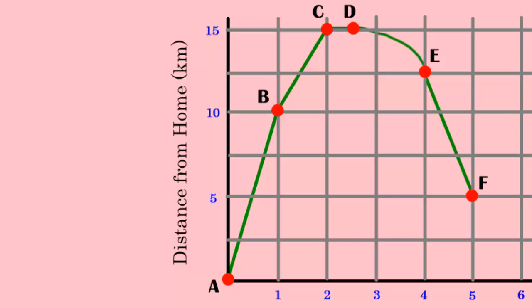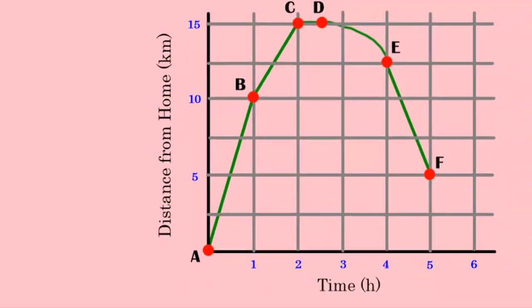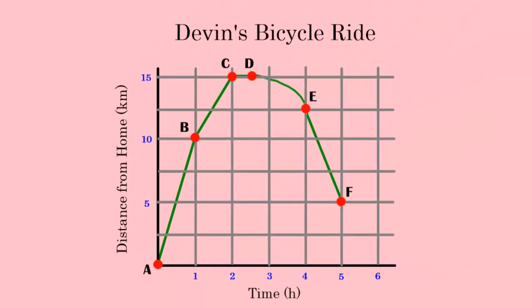What do we see is the difference from when Devon travels from point A to B, compared to point B to C. Two things stick out. The line AB seems much longer than the line BC. It also seems much steeper. If Devon starts his ride at home, at A, and he ends up at B, we can see that this lasts one hour. And he has traveled 10 kilometers. This also means that his speed from A to B looks to be a constant speed of 10 kilometers per hour.